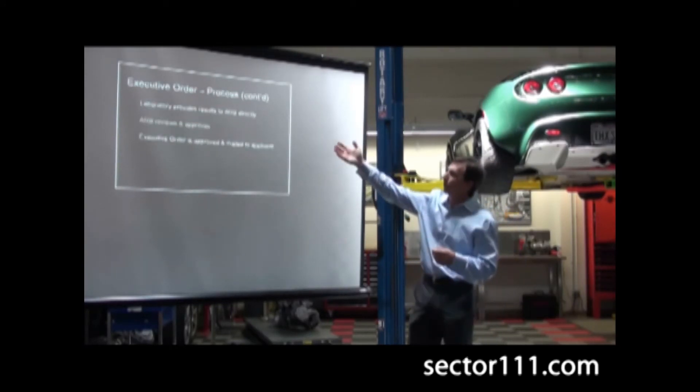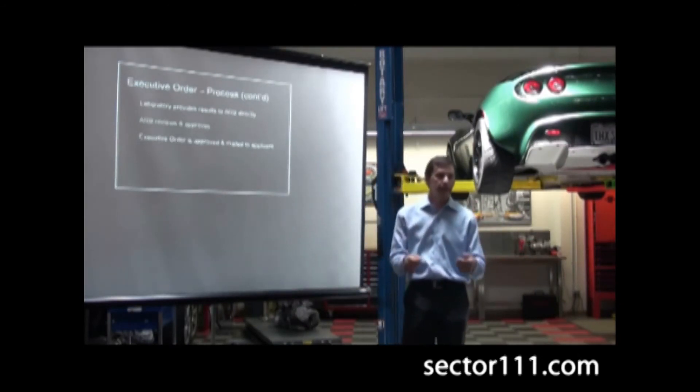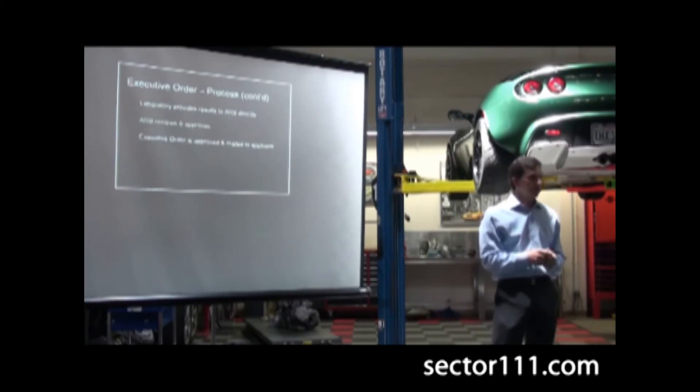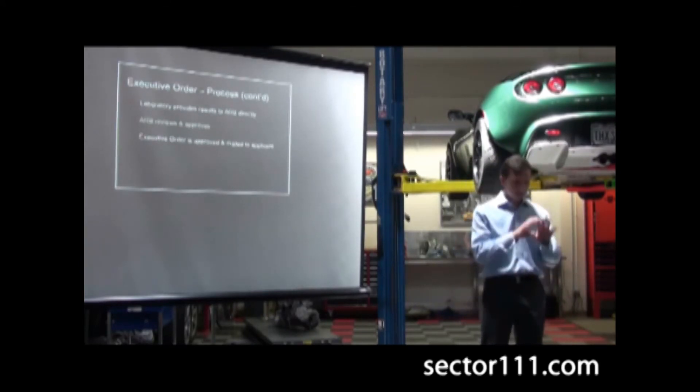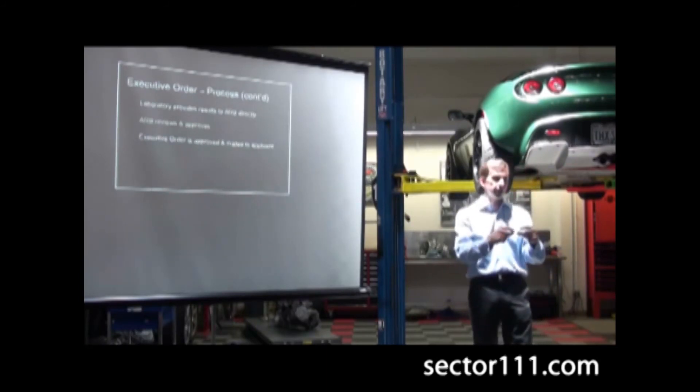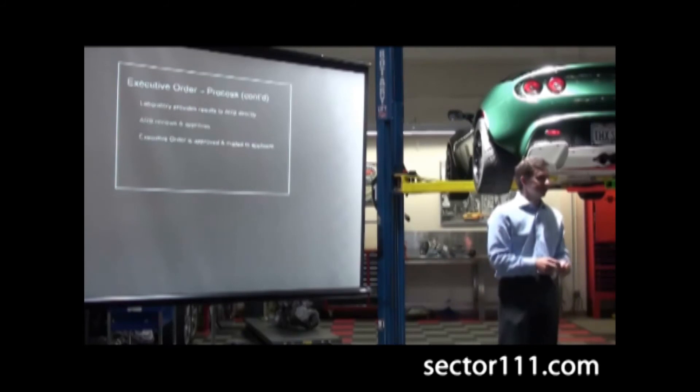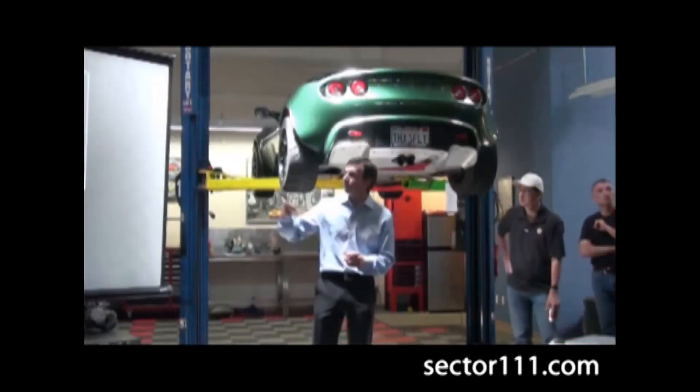And then quickly, the lab provides the results. ARB reviews it and they say yay or nay. And then if everything looks good, they'll send you and you'll get a test letter that says good to go. Put your sticker on the car with this package and that's all you need. So when you go to the smog station, they see your sticker, they see your supercharger and they freak out. And then they see your sticker and they say, okay, good enough. I don't have to look the other way anymore.